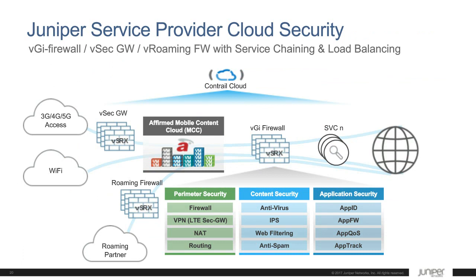Security is very important to a mobile core. Three key use cases in mobile core for security: first, the GI firewall, which protects the Evolved Packet Core from the Internet; second, a vSEC gateway running IPSec between the eNodeBs and the Evolved Packet Core; and third, a firewall on the roaming interface, protecting roaming partner connections. All three use cases are supported in the joint solution with the Juniper virtual SRX. There is integrated load balancing and service chaining as part of the end-to-end solution. The vSRX also supports next-gen firewall applications — intrusion detection and prevention, unified threat management, and content and application security and recognition.